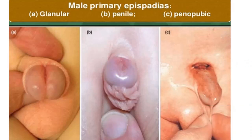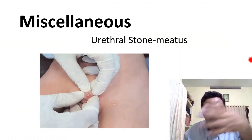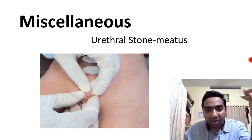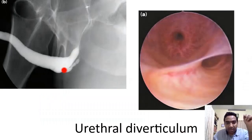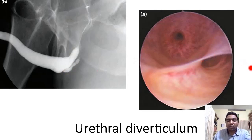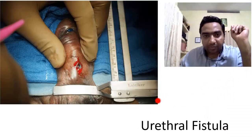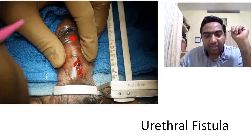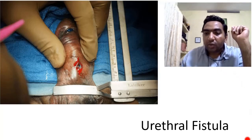Coming to miscellaneous conditions of the male urethra: urethral stones — because the external urethral meatus is one of the narrowest portions, stones can lodge there. Urethral diverticulum — a developmental abnormality; a diverticulum inside the urethra with a septum between them is seen on urethroscopy, and division of the diverticulum is the treatment. Urethral fistula — an opening in the urethra through which urine dribbles; this generally happens when there is an anterior stricture, and is common after hypospadias repair when there is a stricture in the anteriorly repaired segment.